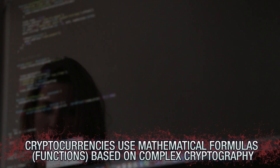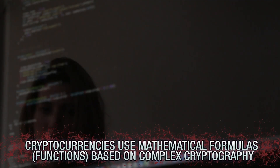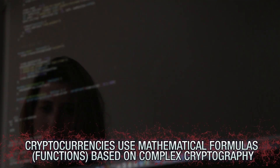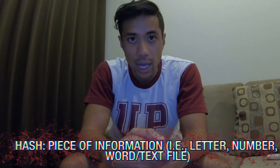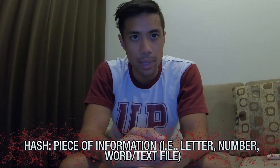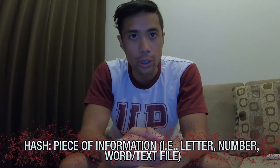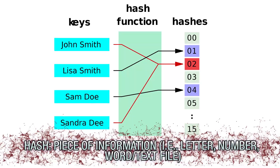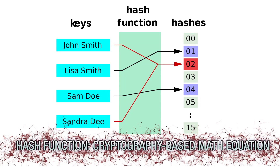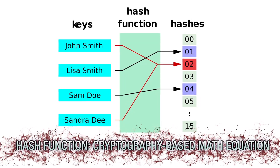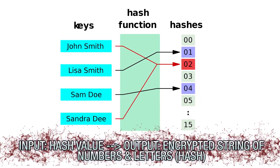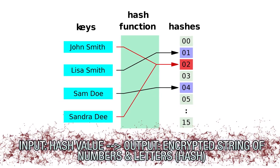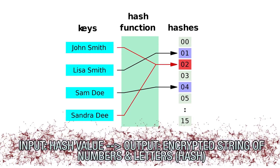Now this is where things may get a little confusing, but I'll talk slow and try my best to explain it in as simple terms as possible. Different cryptocurrencies use different mathematical formulas, or functions, all of which are based on extremely complex cryptography. A hash is a certain piece of information, ranging from a letter or number to even an entire word or text file. A hash function is a cryptography-based math equation where you input a hash value into the equation, then get an encrypted string of numbers and letters as a result — the hash.